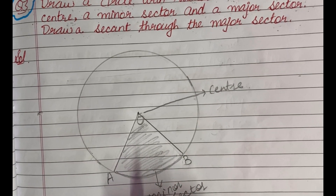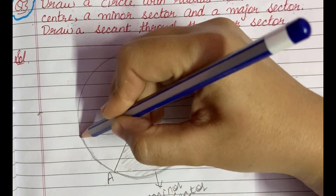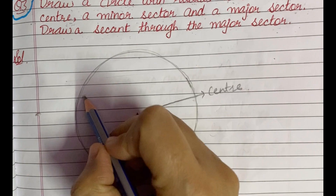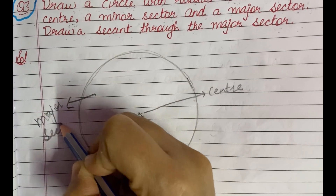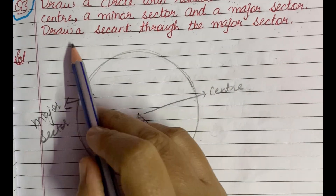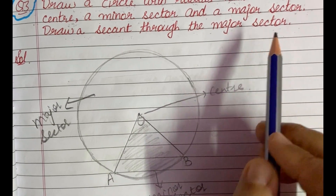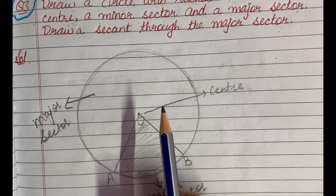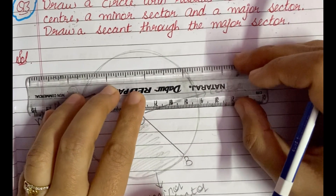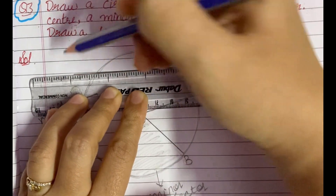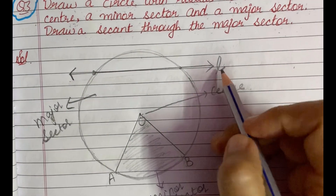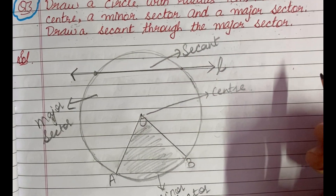The major sector is the region enclosed by the major arc and two radii of the circle. The remaining larger arc is the major arc, and the region formed with the same two radii is the major sector. Now draw a secant through the major sector — a line passing through the circle intersecting the circumference at two points. This line L is the secant of the circle.